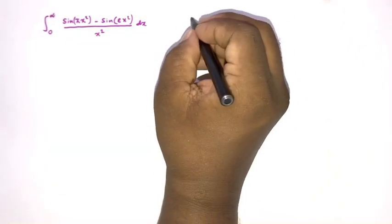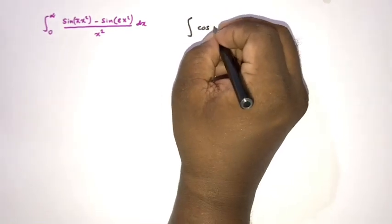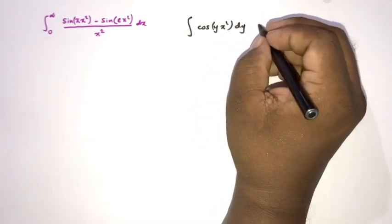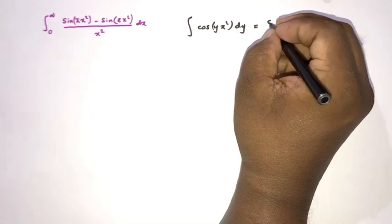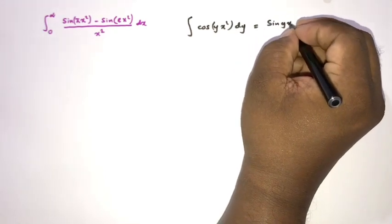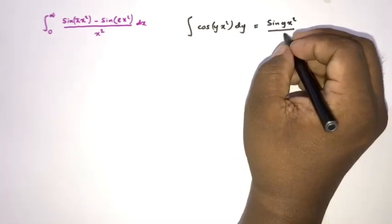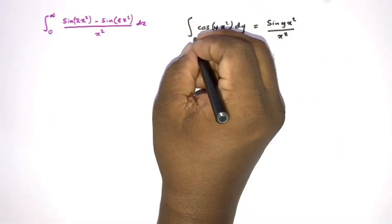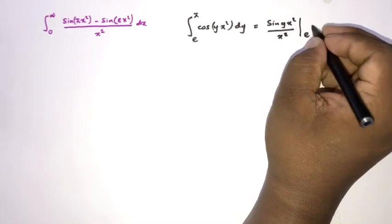First I am going to consider an auxiliary integral: the integral of cosine of y x squared with respect to y. We know the integration of cosine of y x squared is equal to sine of y x squared, and we divide by the coefficient of y, which is x squared. Then I am going to apply the limits from e to pi.